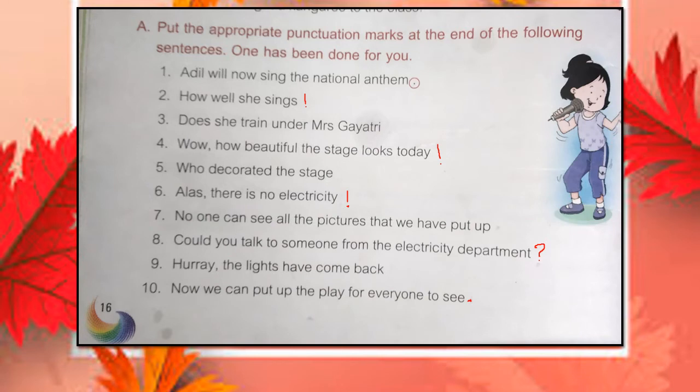So children, we have learned about three punctuation marks: question mark, exclamation mark, and full stop. Full stop is used with a statement sentence. Question mark is used with a question sentence. And exclamation mark is used with a sentence that expresses strong emotions of joy, anger, love, surprise, etc.